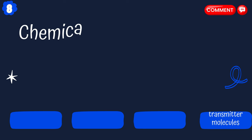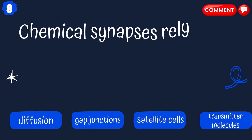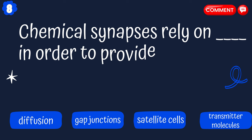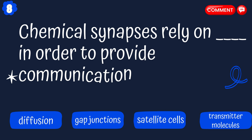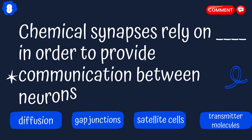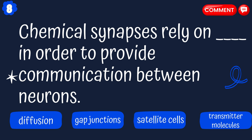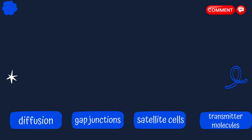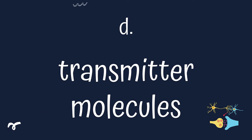Question 8. Chemical synapses rely on blank in order to provide communication between neurons. Is the blank: diffusion, gap junctions, satellite cells, or transmitter molecules? The answer is D: transmitter molecules.